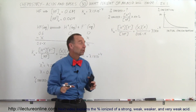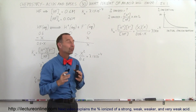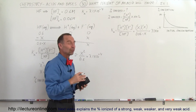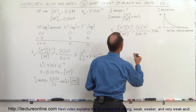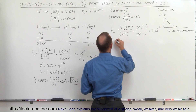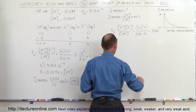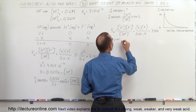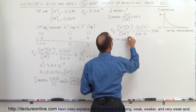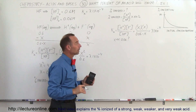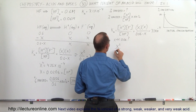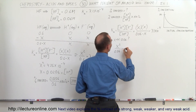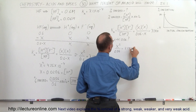Again we'll make the approximation that x is very, very small compared to the initial concentration of 0.06. If it's not, then we'll have to go ahead and solve the quadratic equation. We're going to assume x is much, much smaller than 0.06 — question mark, we don't know, we'll check it out. If that's the case, we can say that x squared divided by 0.06 equals 7.1 times 10 to the minus 4.